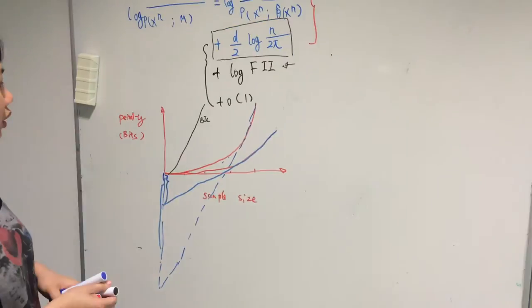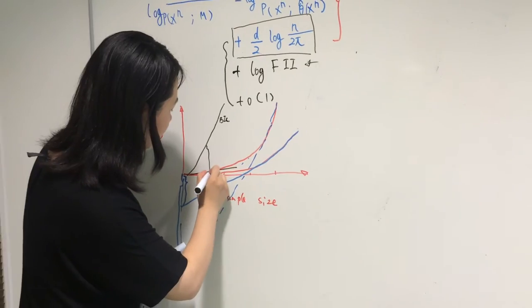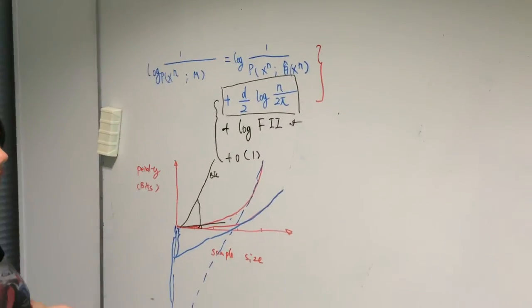On the other hand, BIC puts too much penalty for complex model. It favors simpler model.